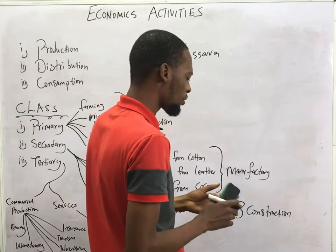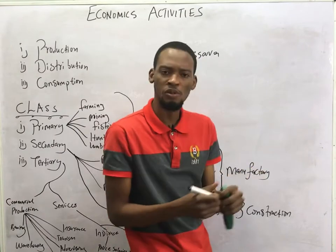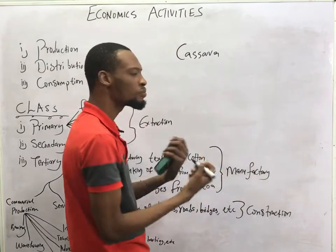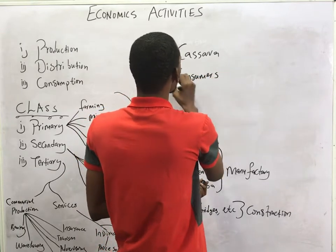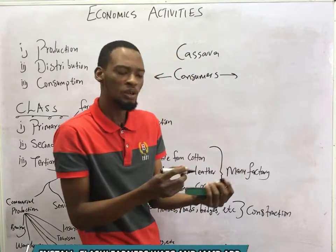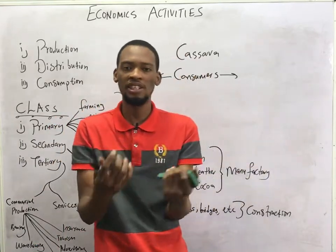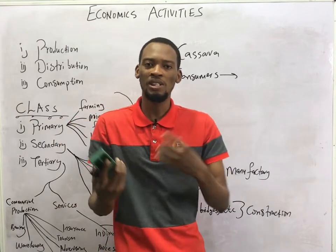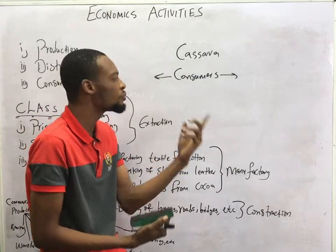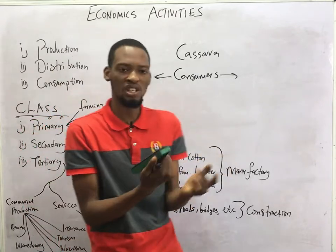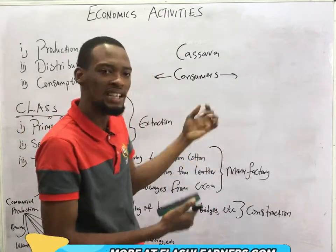After production, you don't just keep the goods. You have to distribute them, because production is not complete until the goods produced reach the final consumers. If the consumers don't get the goods, then production is not complete. Distribution has to do with the various channels through which you get your goods across to consumers — the people you are producing for. So distribution involves transportation, storage, and other factors that enhance it.